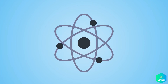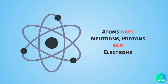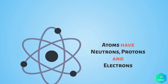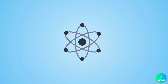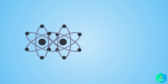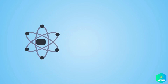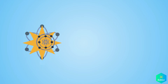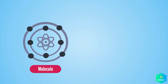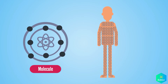To understand this, we need to understand what an atom is. An atom is made up of neutrons, protons and electrons. When there are two atoms or more joined together, this is known as a molecule, and the human body is made up of lots of molecules.